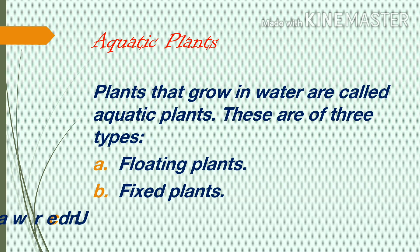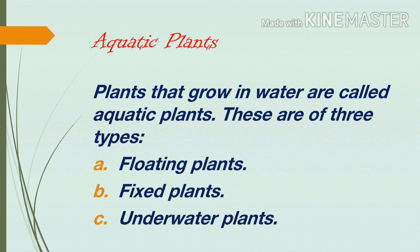Aquatic plants. Plants that grow in water are called aquatic plants. These are of three types: floating plants, fixed plants, and underwater plants. Aquatic plants have adapted to living in aquatic environments and are also referred to as hydrophytes.